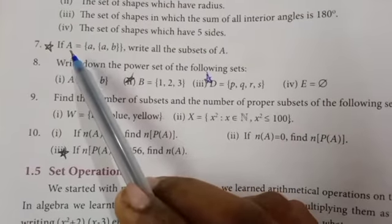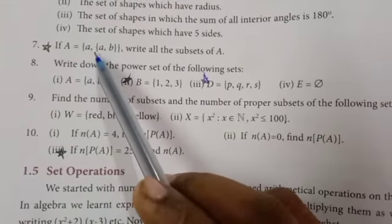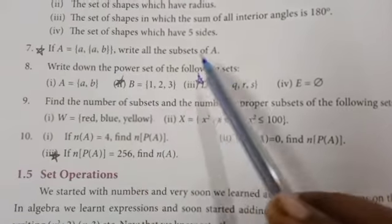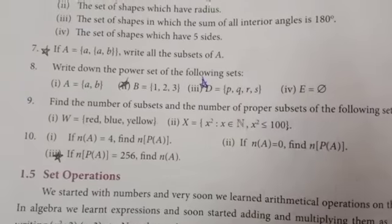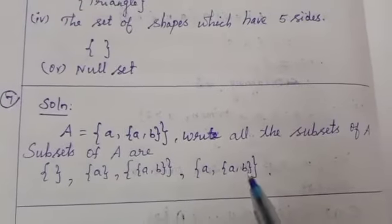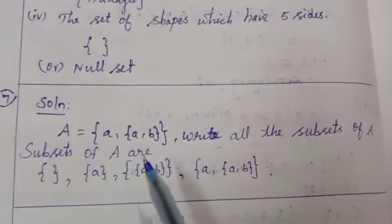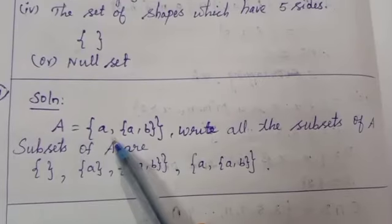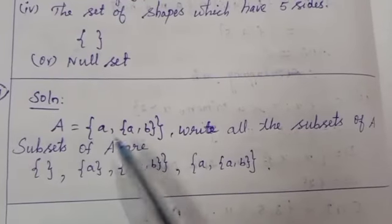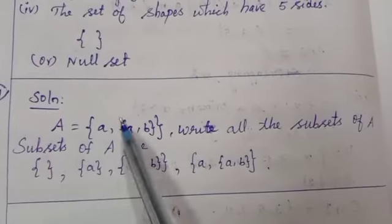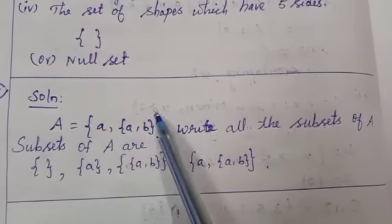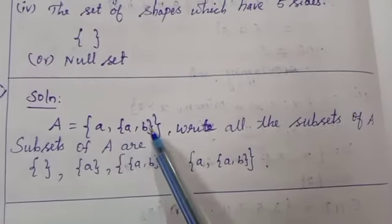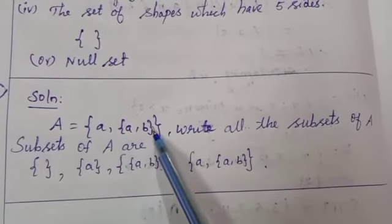Students, now 7th question. If A is equal to {a, {a, b}}, write all the subsets of A. We have to write the subsets. A is the given set — first you write the empty set, then each element individually. So the elements are 'a' and '{a, b}' — this is considered as one element, not counted separately.